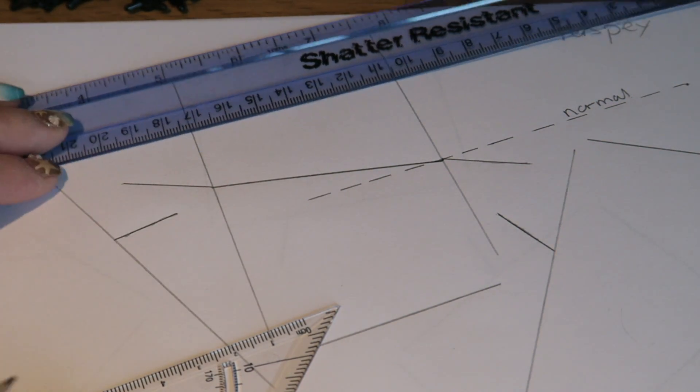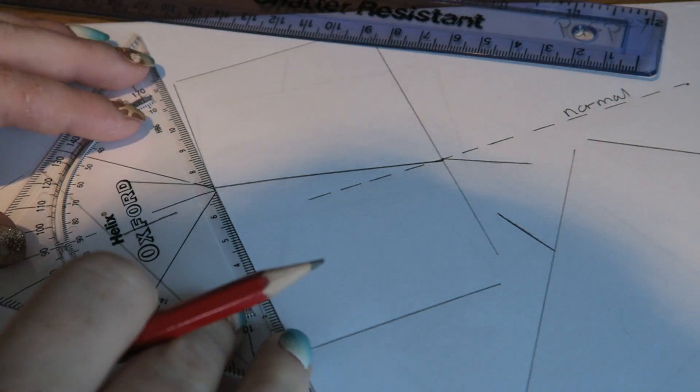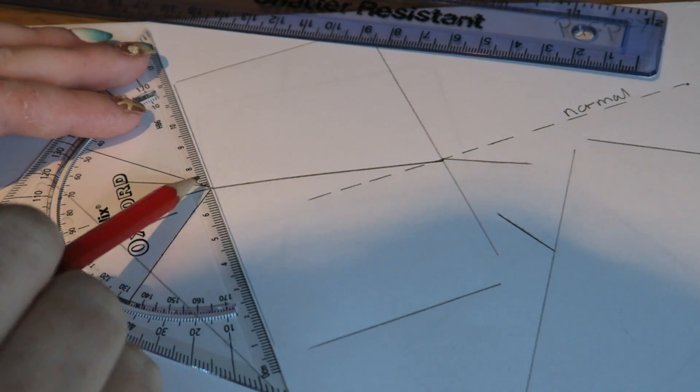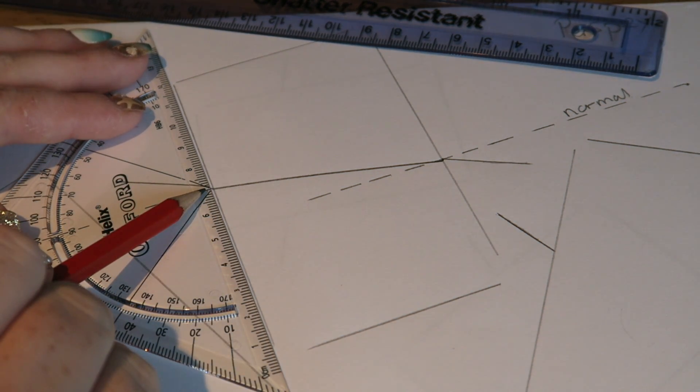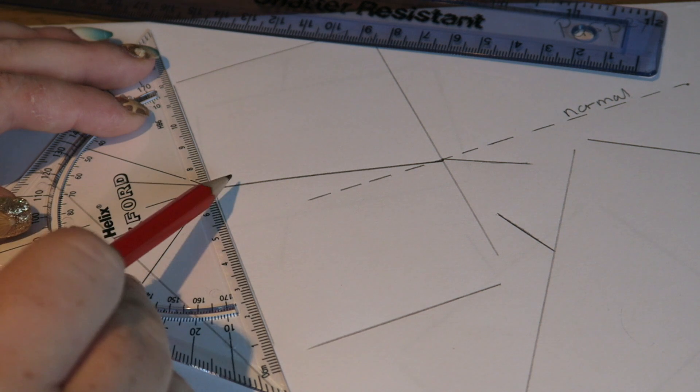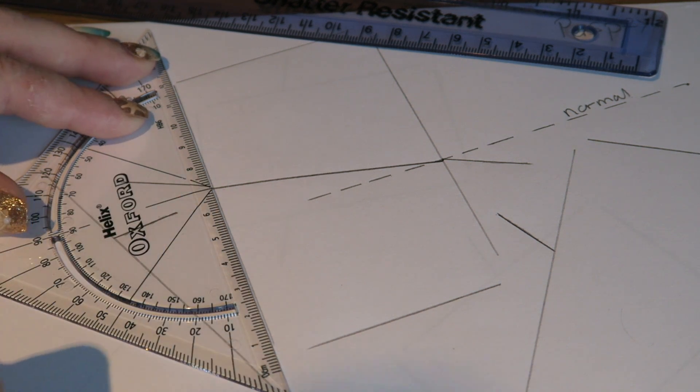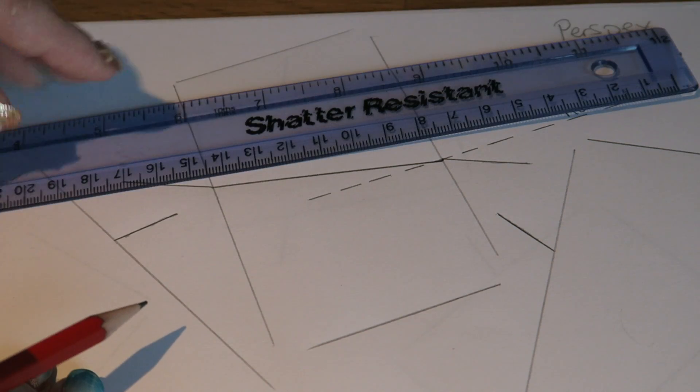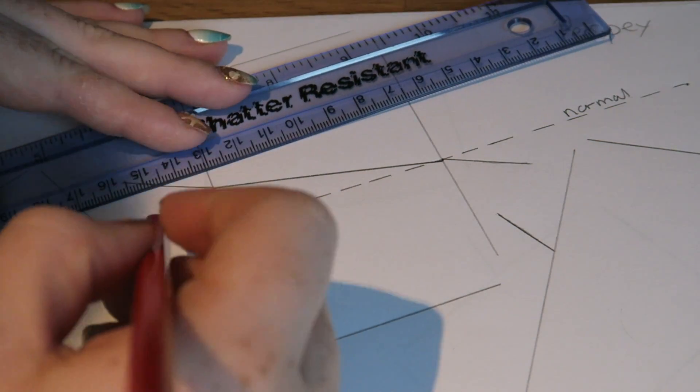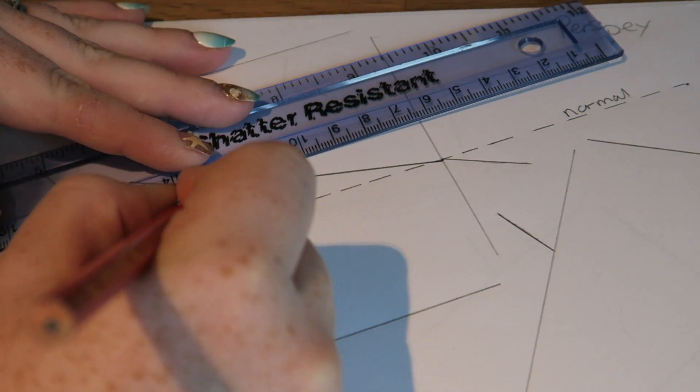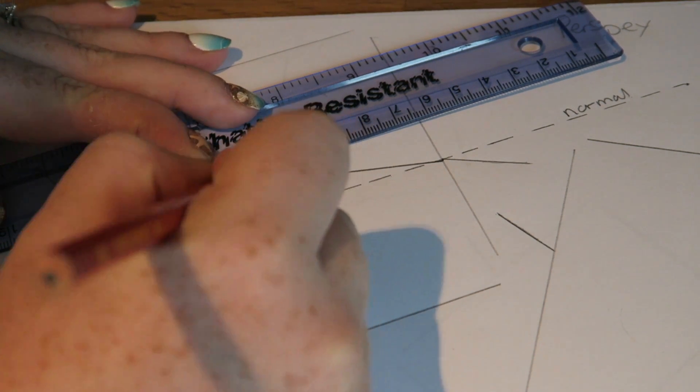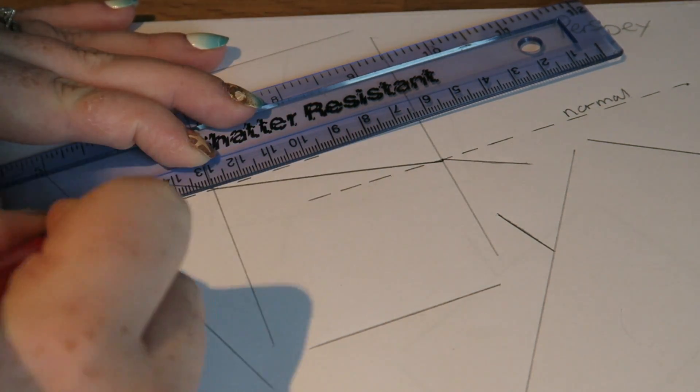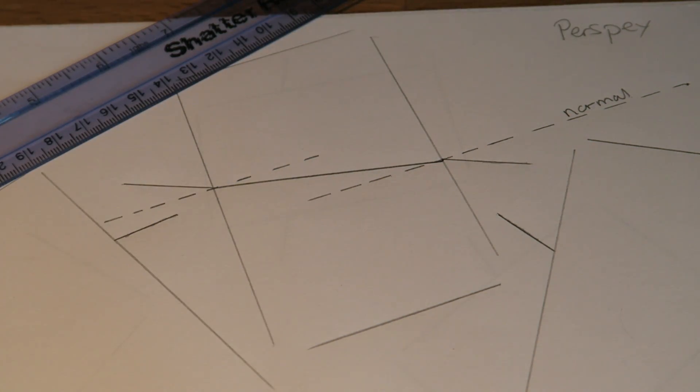So I'm going to do the same for the ray coming out. I'm going to put the point, the middle of the protractor, where the ray came out of the box. Put a little dash at 90 degrees. Use my ruler to join that up. I'm going to do that with a dashed line, so that's my second normal.